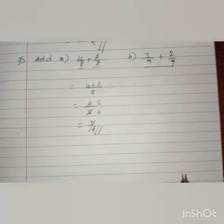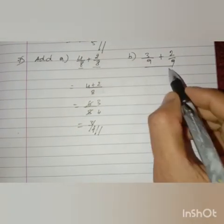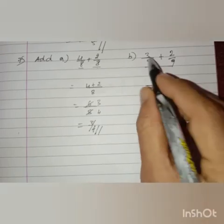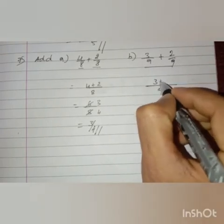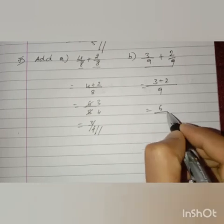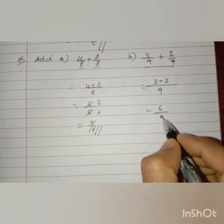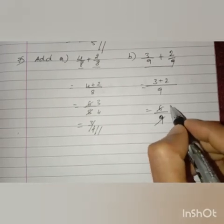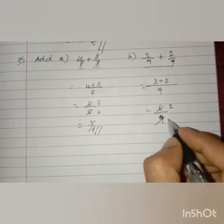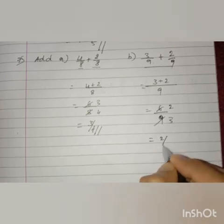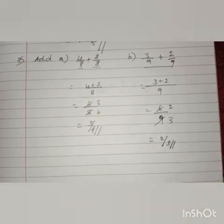Next, here also the denominators are the same. The LCM of 9 and 9 is 9. Add the numerators: 3 plus 2 is 5, giving 5 by 9. Wait — 3 plus 2 is 5, so we have 5 by 9. Both 6 and 9 are divisible by 3, so 3 twos are 6, 3 threes are 9. The final answer is 2 by 3.